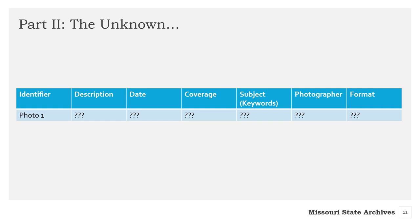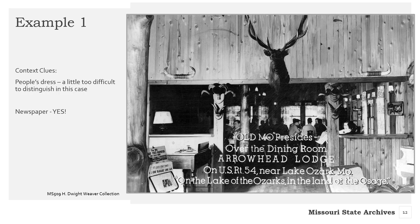Let's jump back a little and pretend that there are metadata you don't know, because this will happen. In the second half of this module, we will take some time to give you tips for figuring out the missing metadata on your own. For example, what if you have a photograph that you know certain things about but not the date? Date is the most common piece of missing metadata. For determining date, we suggest using context clues. Look closely at this postcard of a dining room inside Arrowhead Lodge at Lake of the Ozarks.